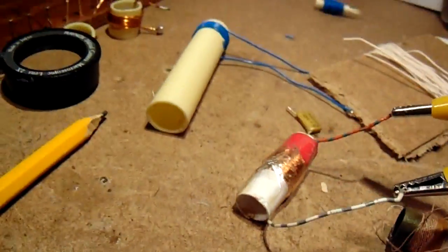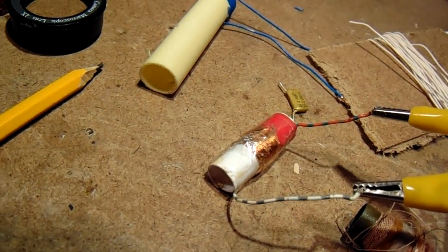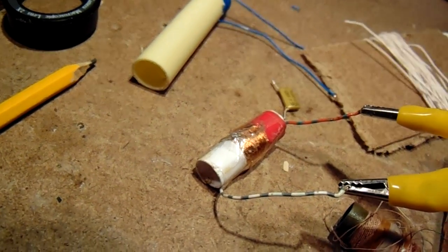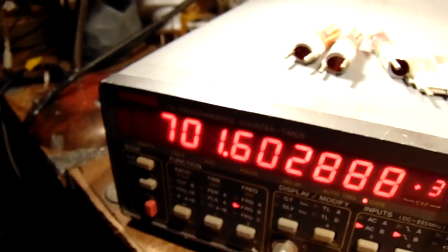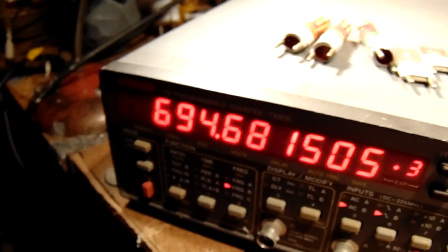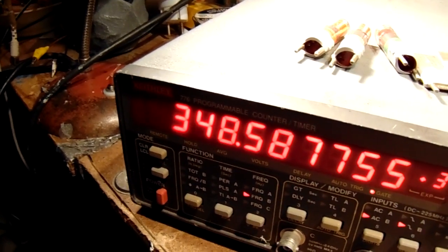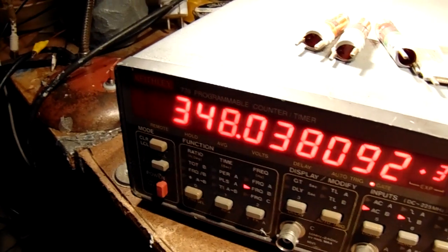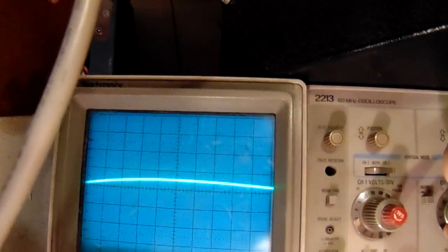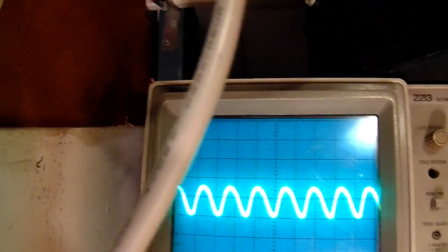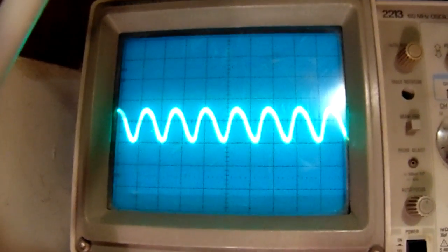This coil, for instance, made with very thin wire, worked on 701 kilohertz. And when I switch it, on 3.48 megahertz. And it has a good waveform. So this is the waveform, a good waveform.